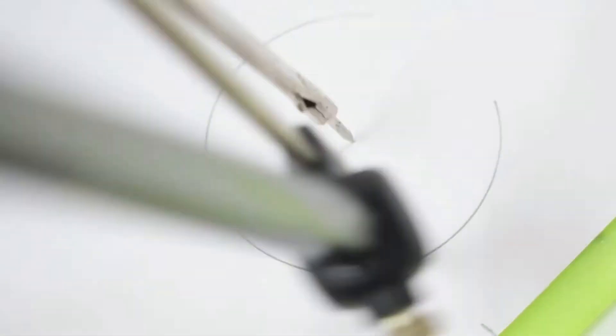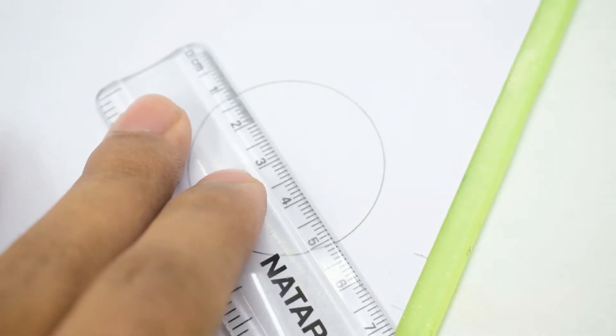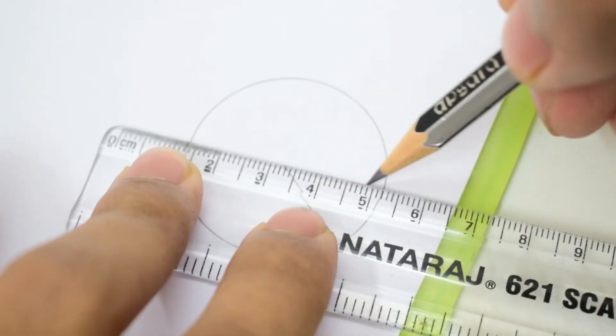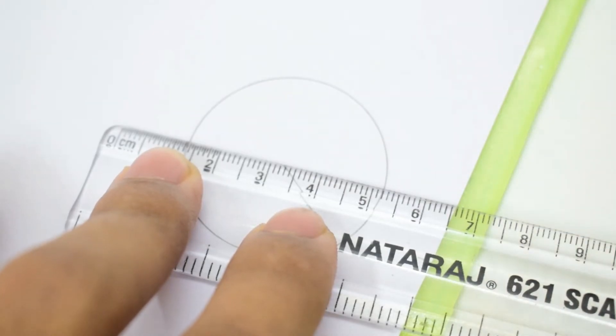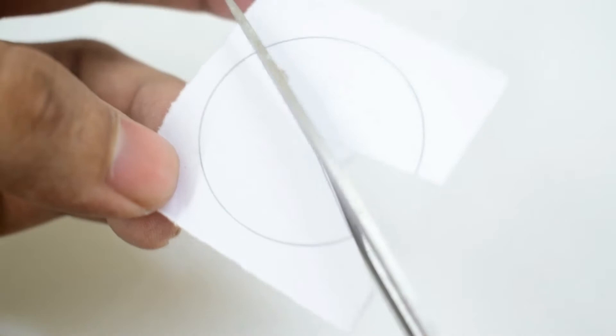Before proceeding any further, let's cut out a sector of a circle from a white sheet of paper and paste it on the fan's hub to work as the interruptor. The basic principle of operation is that a black surface, in this case the fan's hub, doesn't reflect any light whereas a white surface reflects all the incident light.